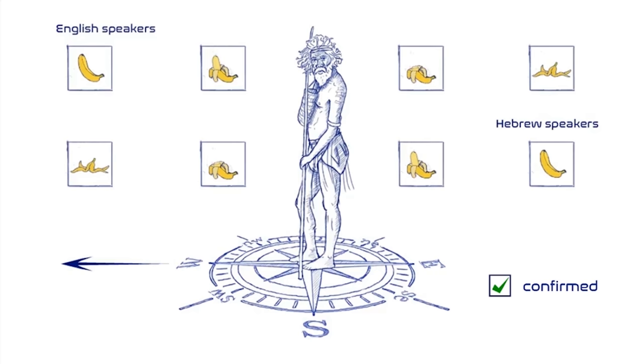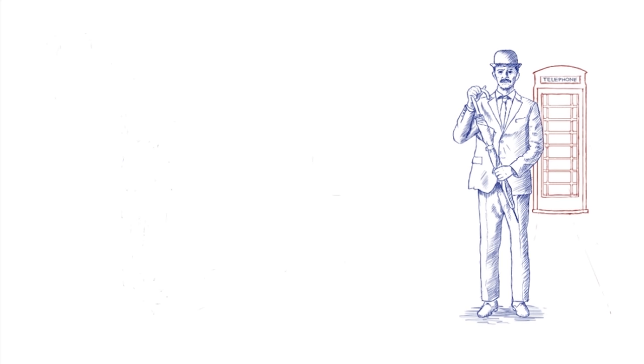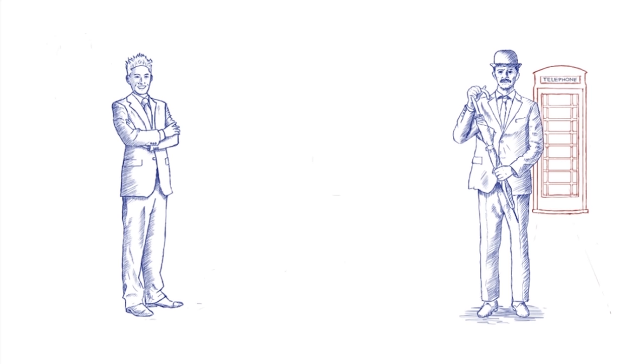People's ideas of time differ across other languages as well. English speakers tend to talk about time in horizontal spatial metaphors. The best is ahead of us or the worst is behind us, while Mandarin speakers who use front-back spatial metaphors for time as well, also systematically use vertical metaphors. For example, the next month is the down month and the last month is the up month. So do Mandarin speakers think about time vertically more often than English speakers do?